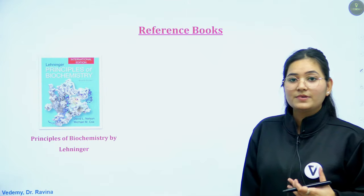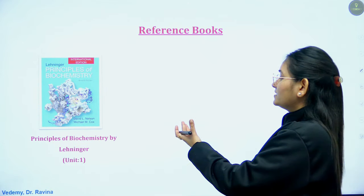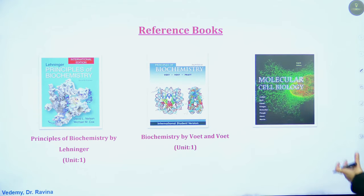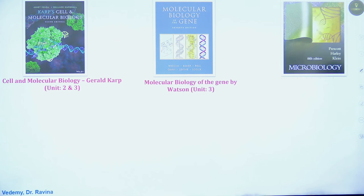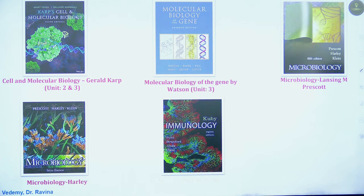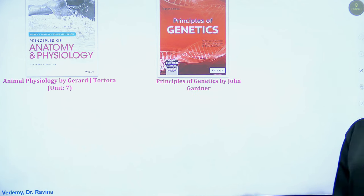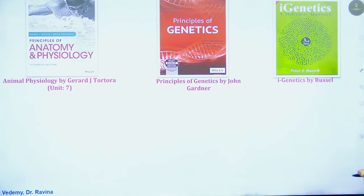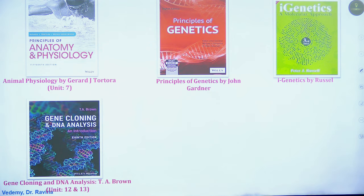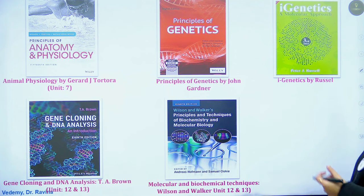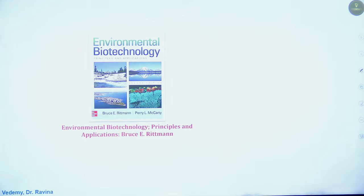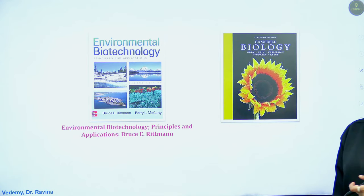This is the reference book list I told you in the last video. For biochemistry: Lehninger, Voet and Voet. For molecular and cell biology: Lodish, Targ — unit 2 and 3, cellular and molecular biology. Molecular biology: Watson. Microbiology is also there. Immunology: Kuby. Plant physiology: Taiz and Zeiger. Animal physiology: Tortora. Principles of iGenetics: Gardner. And Lewin's iGenetics, unit 13 and 12. Applied biology and methods in biology: T.A. Brown and Wilson and Bolker. Environmental biotechnology and Campbell biology are also there.